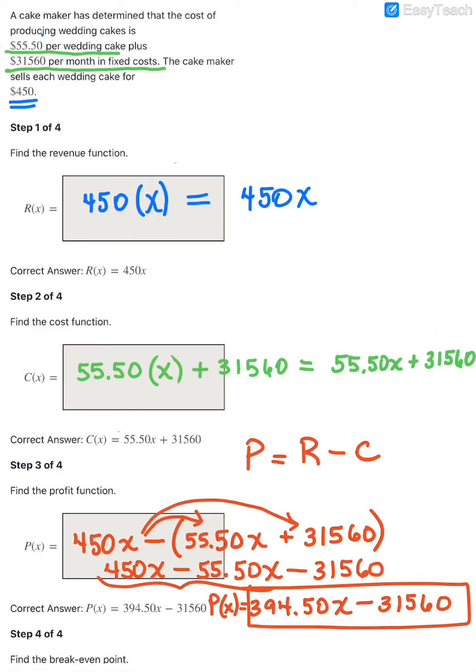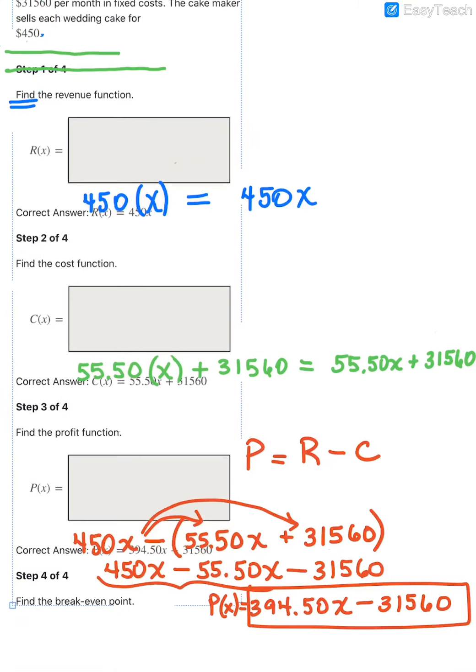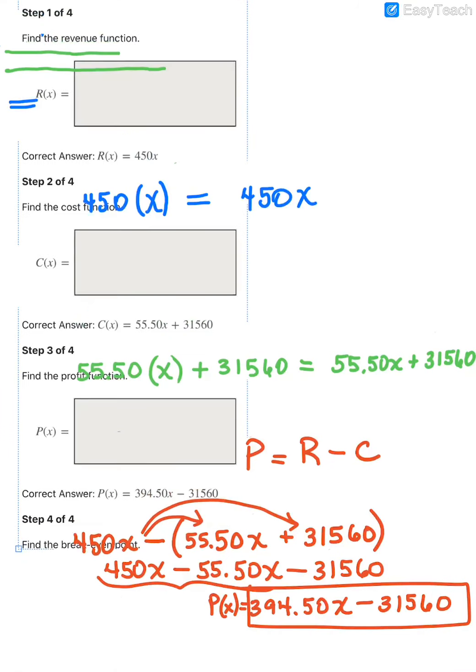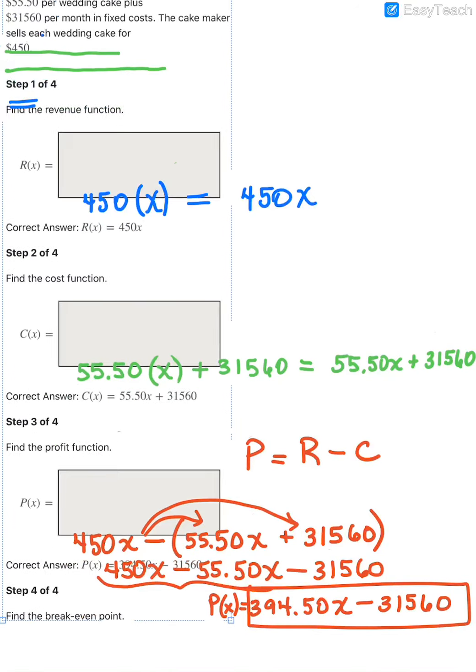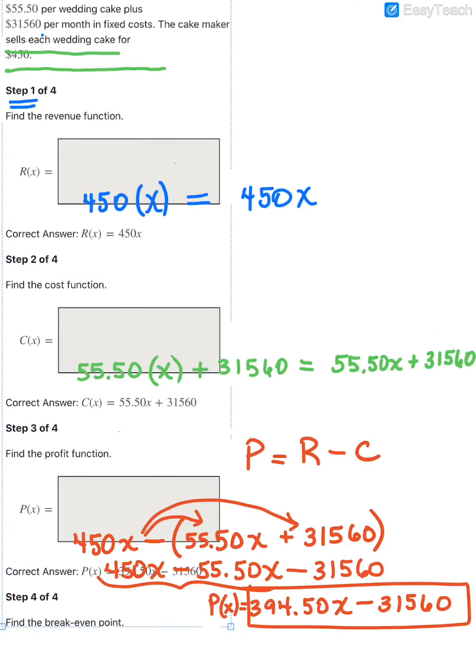The last step here is asking us to find the break-even point. With our break-even point, we want to know when the profit is exactly zero. So we're going to take this profit equation and we're going to set it equal to zero and we solve it. Break-even point is when is your profit equal to zero.